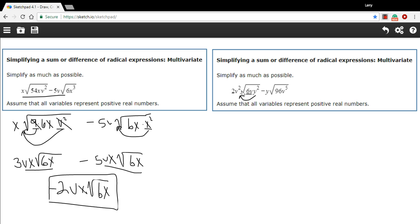I can take the square root of y squared making it just a y. So to rewrite this I would get 2v² times y times the square root of 6v.